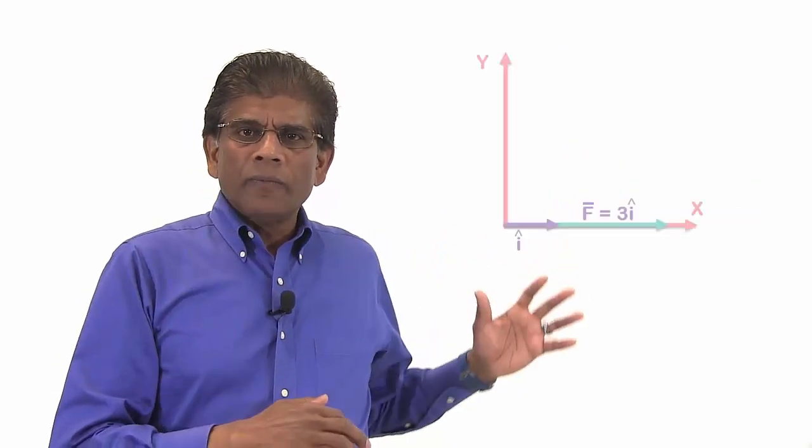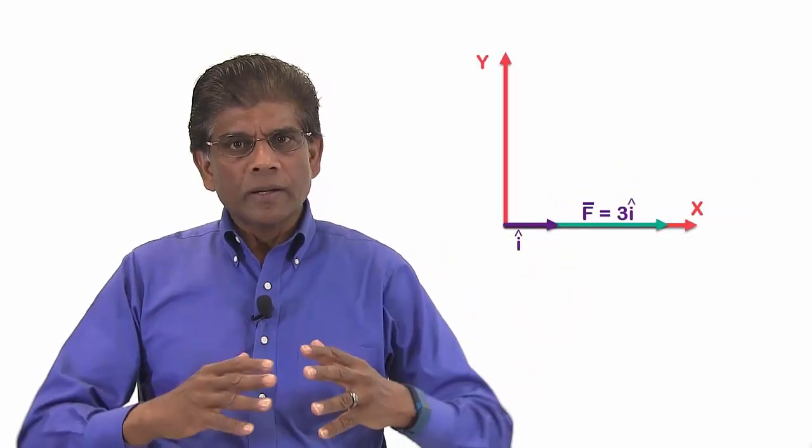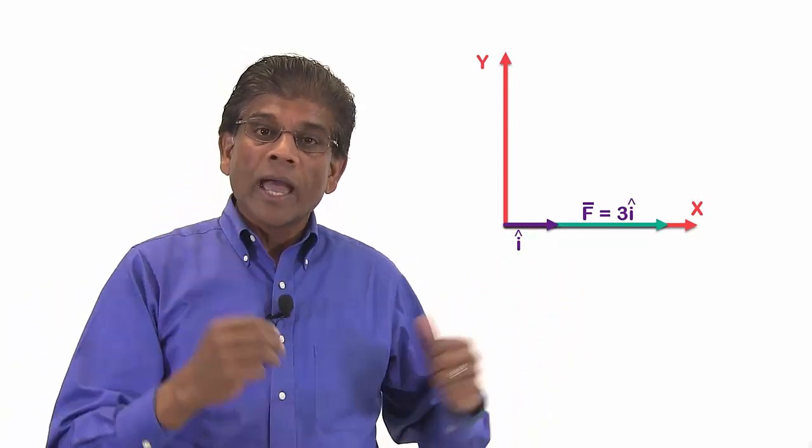Alright, I have here a vector f is equal to 3i. This means the vector f is along the x direction, and it is 3 units long, as shown here.